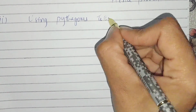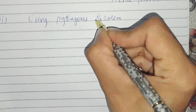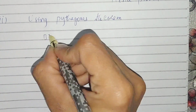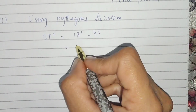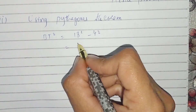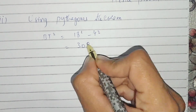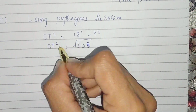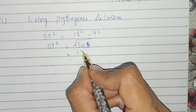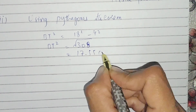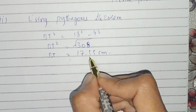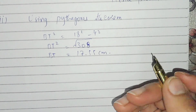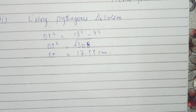BT² = 18² − 4² = 324 − 16 = 308. Taking the square root gives BT = PQ ≈ 17.55 centimeters.